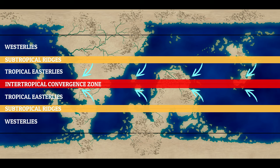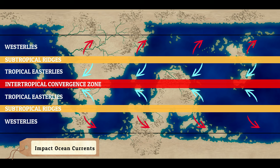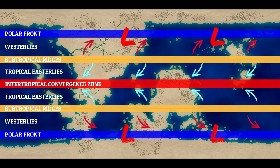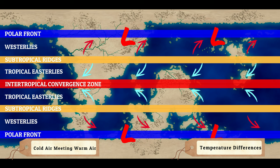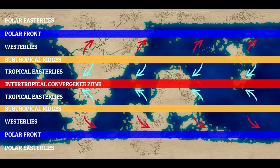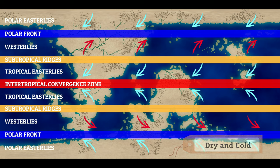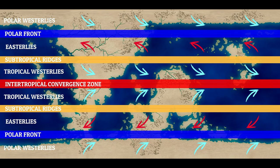The westerlies then follow the subtropical ridges, between 30 and 60 degrees north and south, blowing west to east, giving them their name. Westerlies have an enormous impact on ocean currents, which we'll discuss in just a little bit. Then the polar front is a low pressure zone that sits along the 60 degrees north and south line, categorized by cold polar air meeting warm tropical air, with drastic temperature differences between the two sides of the front. Finally, we have the polar easterlies, running from the poles to the polar front, which are dry and very cold. If your world rotates in the opposite direction, then everything is going to be flipped, with tropical westerlies, then easterlies, then polar westerlies.